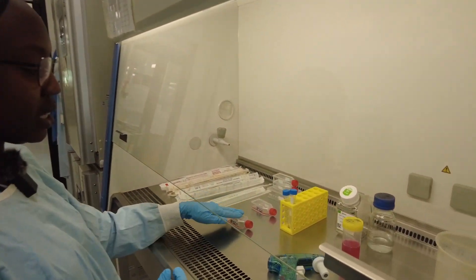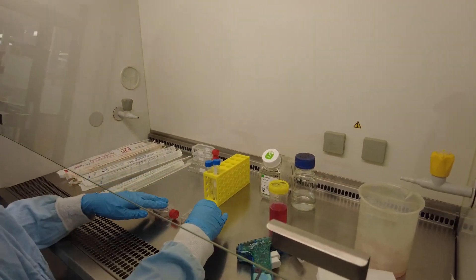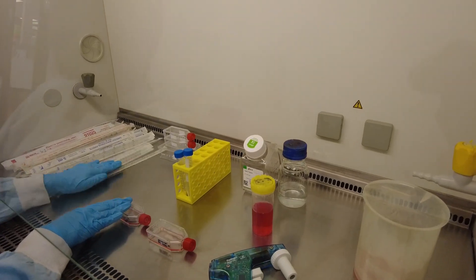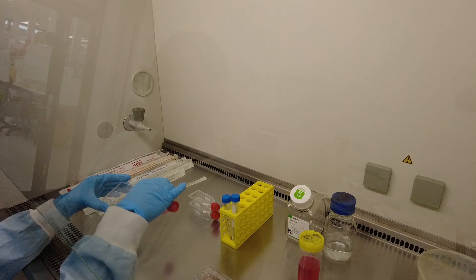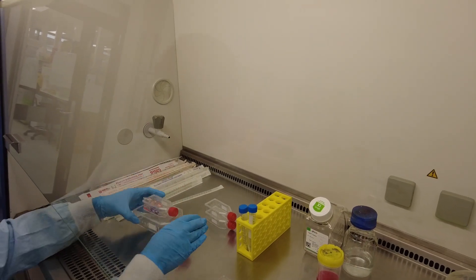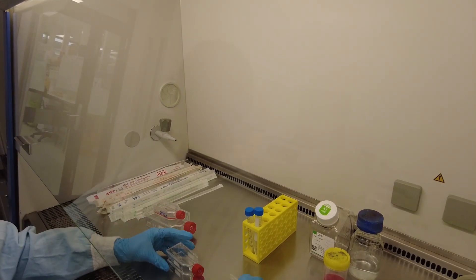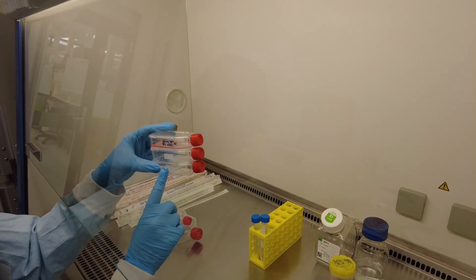So now we're going to split these two flasks. There's more cells in this second flask. So we're going to put it into the bigger flask there so it can continue growing. And then we're going to split this into two smaller flasks.